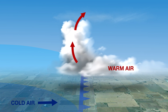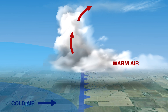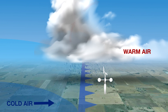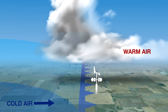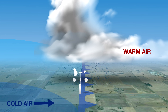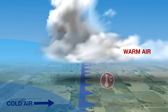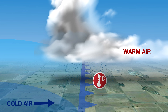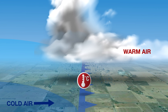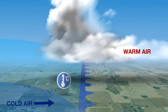As the cold air moves through, we also get quite a significant change in wind direction. Typically in Australia this is from a northwesterly direction in the warm air ahead of the change, around to a southwesterly direction behind the change. Also with this colder air moving over a fixed point, we get a large drop in temperature as we go from the warm air to the colder air.